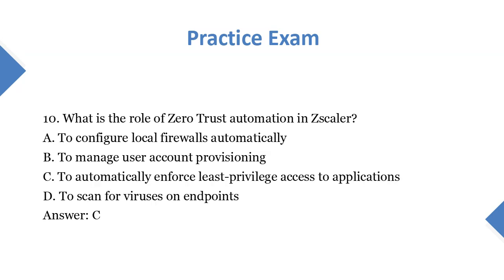Question 10: What is the role of Zero Trust Automation in Scalar? A. To configure local firewalls automatically. B. To manage user account provisioning. C. To automatically enforce least privilege access to applications. D. To scan for viruses on endpoints. Answer: C.